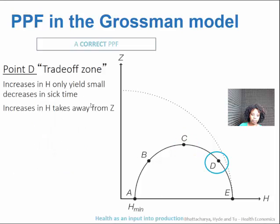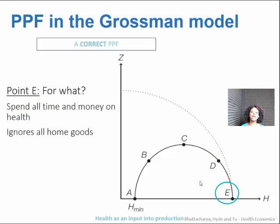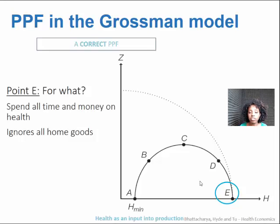Point d is the trade-off zone — the opposite of b. At this point, any more that you do decide to invest in h, you're going to get large reductions in z. You can invest in your health here, but you will have to give away some z, some fun. Point e is where you're allocating absolutely everything you possibly could — all of your resources, money and time — towards your health and nothing at all towards fun or anything else. It's possible, but at great cost to z.